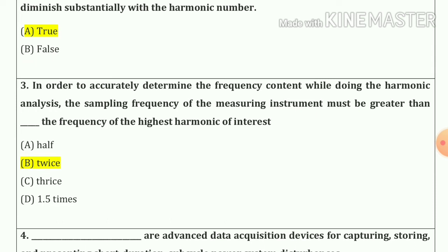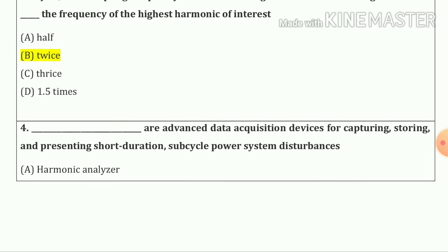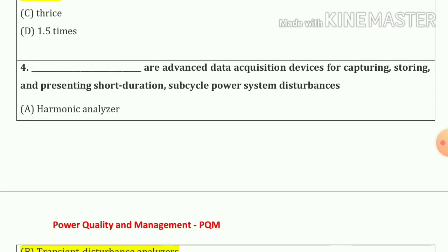Question number three: in order to accurately determine the frequency content while doing the harmonic analysis, the sampling frequency of the measuring instrument must be greater than twice the frequency of the highest harmonic of interest. The answer is option B.